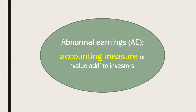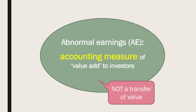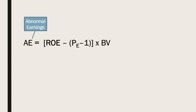Abnormal earnings is an accounting measure of value add to equity investors. It is not a transfer of value, as is the case with dividends and free cash flow. Abnormal earnings equals return on equity minus rOE minus one, all times book value of equity. In other words, abnormal earnings is driven by three things: return on equity, cost of equity capital, and the book value of equity.